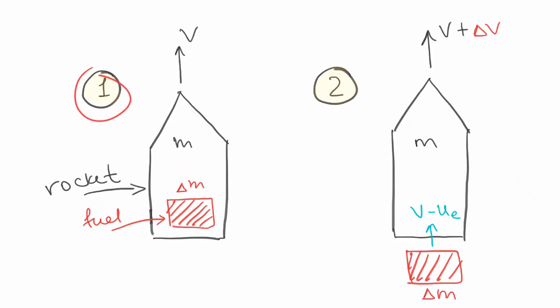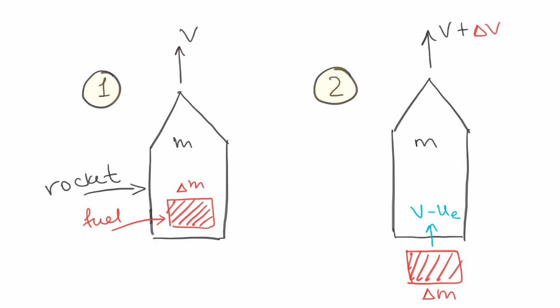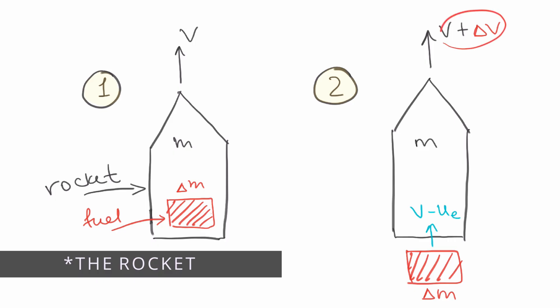Since we need to find the change of momentum, we look at the rocket at two different time points. At the first point, we have fuel on board and the rocket is already moving with some velocity. We call the mass of the rocket m, the mass of the fuel delta-m, and the rocket's velocity v. At the second time point, that fuel has already been burned — it's exited the rocket but still has mass delta-m.